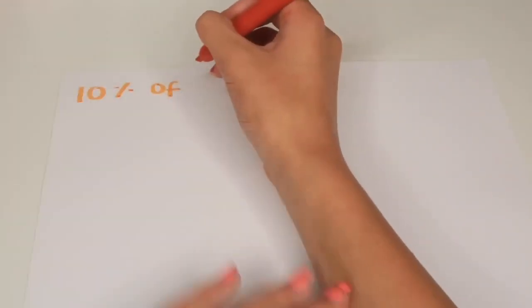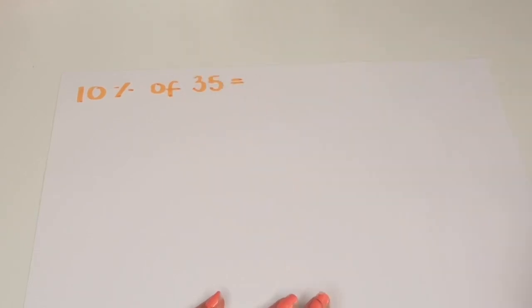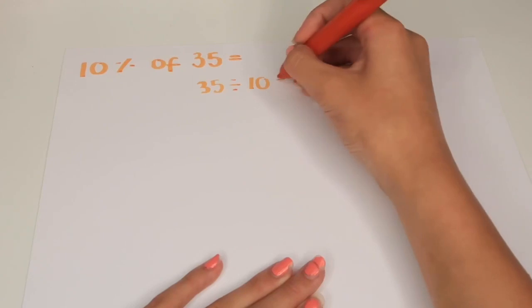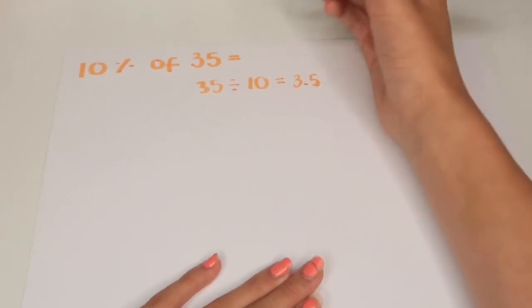So let's say we wanted to find 10% of 35. We would do 35 divided by 10 which is 3.5. We divide it by 10 because we're trying to find 10%. So 10% of 35 is 3.5.